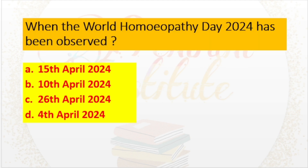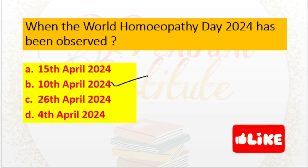When has the World Homeopathy Day 2024 been observed? a. 15th April 2024, b. 10th April 2024, c. 26th April 2024, d. 4th April 2024. Answer: 10th April 2024.